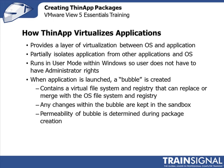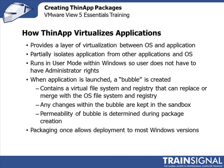While we're creating the ThinApp package, we'll define the permeability of the bubble, both at the file system and the registry level. One of the major advantages of ThinApp is the ability to package the application once and then deploy it across multiple different Windows operating systems. The most important thing to keep in mind is that if we want to deploy it to a certain operating system and above, we need to package it on that lowest level of operating system that we would want to deploy it to. This will come into play when we talk about the best practices for our packaging machine.